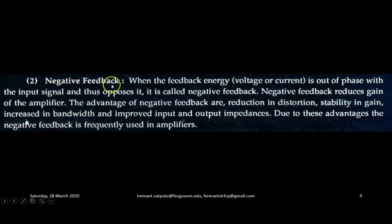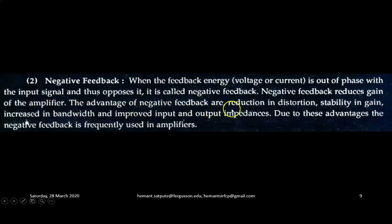The second type of feedback is negative feedback. When the feedback energy, either voltage or current, is out of phase with the input signal and thus opposes it, it is called negative feedback. Negative feedback reduces the gain of the amplifier. The advantages of negative feedback are reduction in distortion, stability in gain, increase in bandwidth, and improved input and output impedances. Due to these advantages, negative feedback is frequently used in amplifiers.